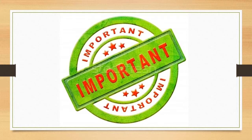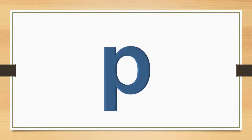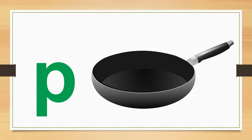Knowing letters and their sounds is important because it helps us learn to read. This is the lowercase letter P. The letter P says P. P says P. The word pan starts with the sound P. P, pan, P.